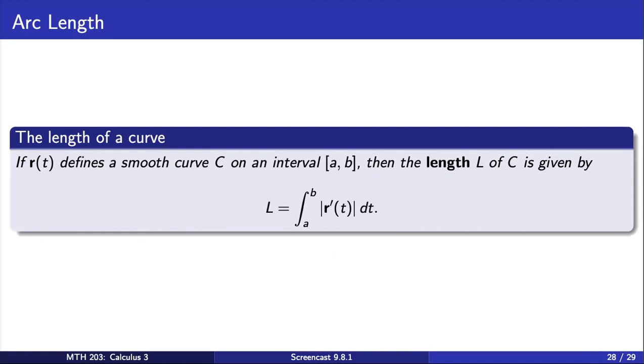This procedure gets us to the following formula for arc length. If R defines a smooth curve C on an interval from A to B, then the length of C is given by the integral from A to B of the magnitude of the derivative of R. Note that this formula applies to curves in any dimensional space. Moreover, this formula has a natural interpretation.